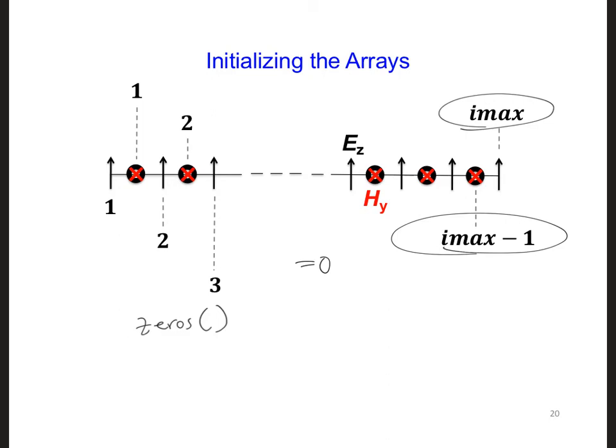Now note that MATLAB annoyingly creates a two-dimensional matrix of size imax times imax if you write ez is zeros imax. So we don't want a two-dimensional array. So instead, I'm going to put x through that. Instead, I recommend you write zeros imax comma 1. This will make a 1D array that stores imax numbers.